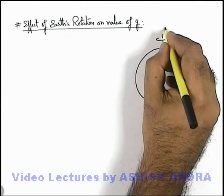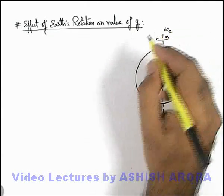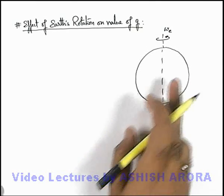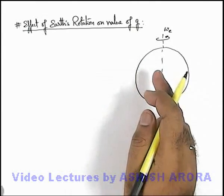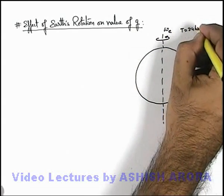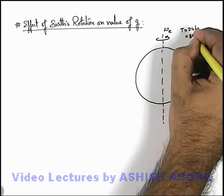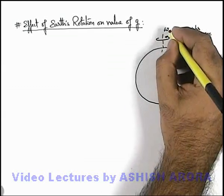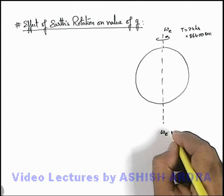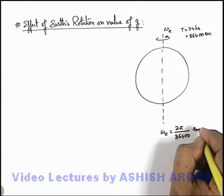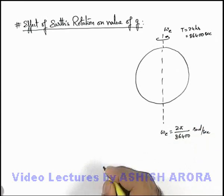Say we are given the angular speed of rotation of Earth is ω_e. We know well that in a period of 24 hours Earth revolves for a complete rotation, and its time period is 24 hours or in number of seconds it is 86400 seconds. So the value of ω_e is already known to us which can be written as 2π/86400 radians per second.